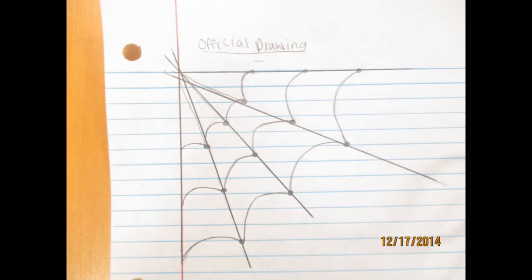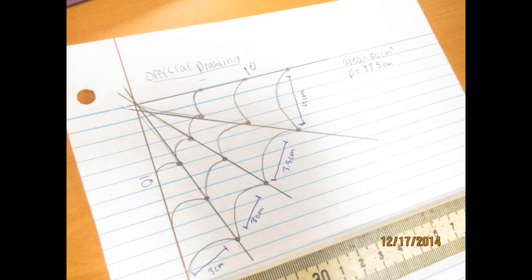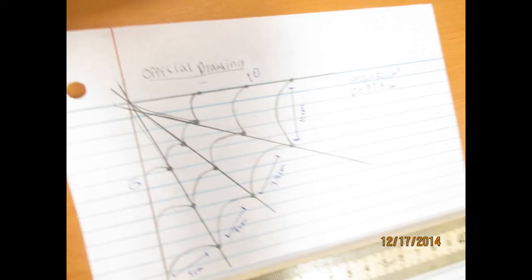We now have made an artificial model spiderweb. The base of the web is 10 centimeters, and the height is 10 centimeters. The first and second triangles are 3 centimeters long. The third triangle is 3.5 centimeters long, and the fourth triangle is 4 centimeters long.